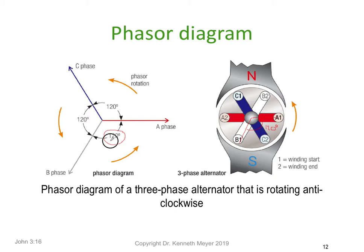That 120 degrees between voltages will not change — it's always going to be 120 degrees. The relationships to the currents, as long as it's a resistive load, will stay in the same locations, but as we introduce capacitance and reactance, the currents will shift from where the voltages are. We're rotating anti-clockwise but labeling clockwise. The horizontal here is always going to be our reference — we always draw from the origin to the right on the horizontal as our reference.